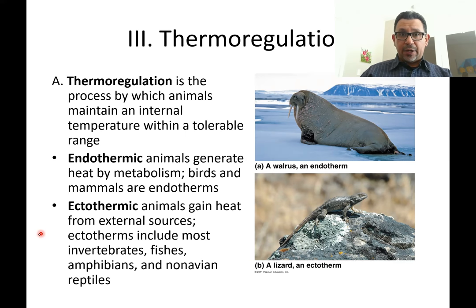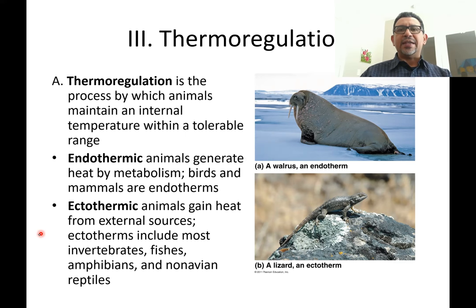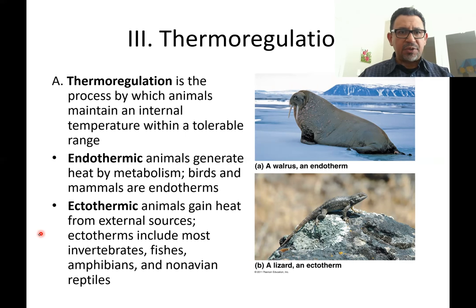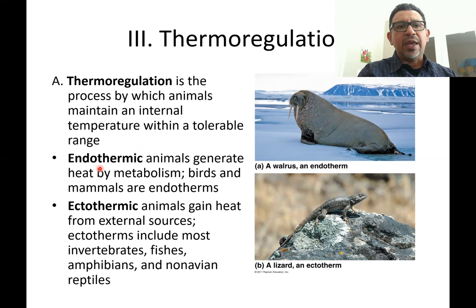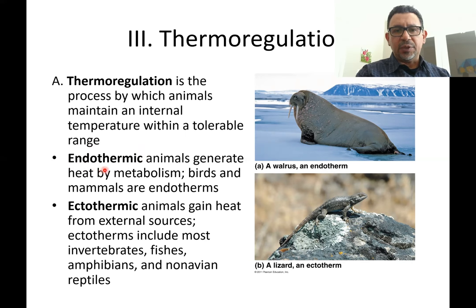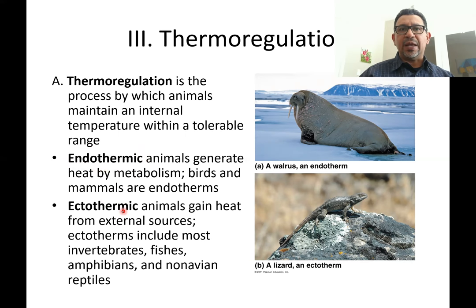In science, we don't want to use terms like cold-blooded or warm-blooded because they are not effective at describing exactly what an animal is doing — generating heat from inside or taking heat from the outside. The question is: what is the source of heat? Endothermic animals have internal sources of heat; ectothermic animals rely on external sources of heat.